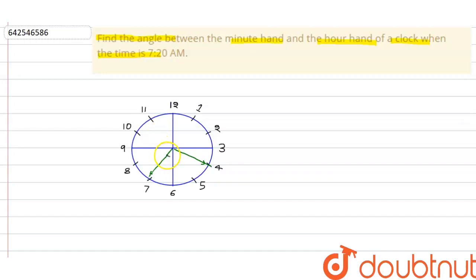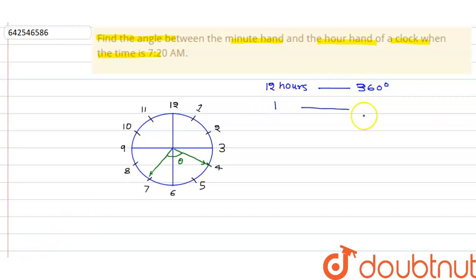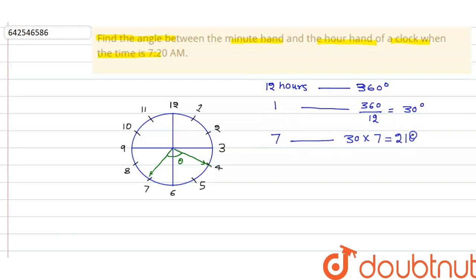Now, what we need to find — we need to find this angle. We know that the hour needle makes 360 degrees in 12 hours, that means 1 hour is equal to 360 divided by 12, which is 30 degrees. Our hour needle is at 7, so it makes an angle of 30 × 7, which is 210 degrees. So this total angle is equal to 210 degrees.